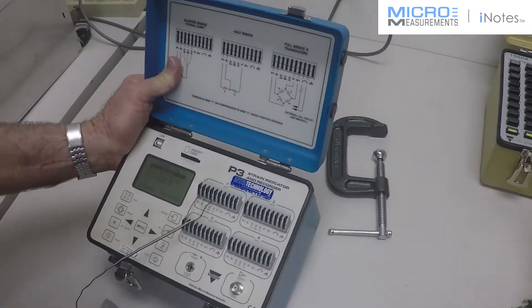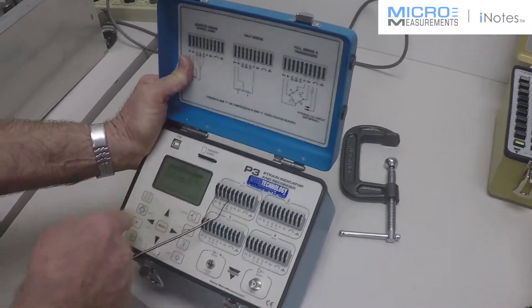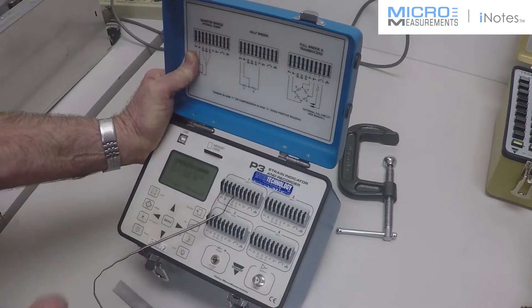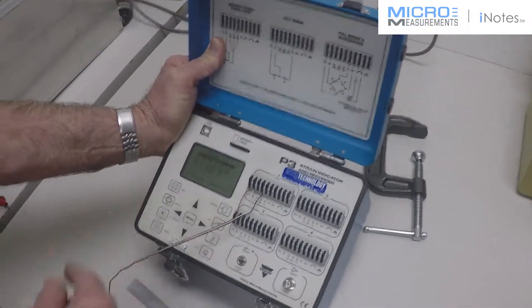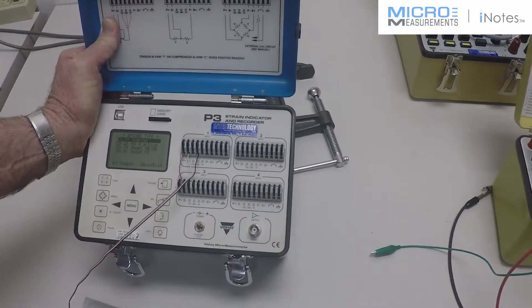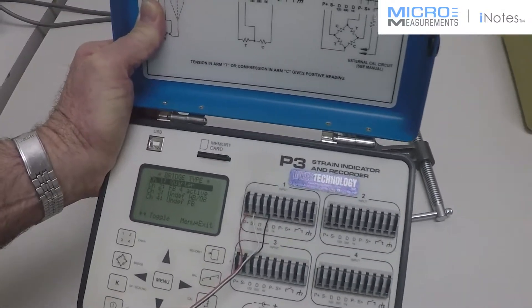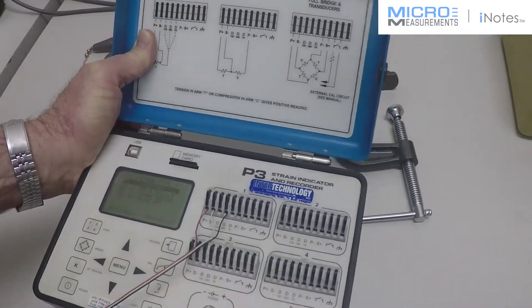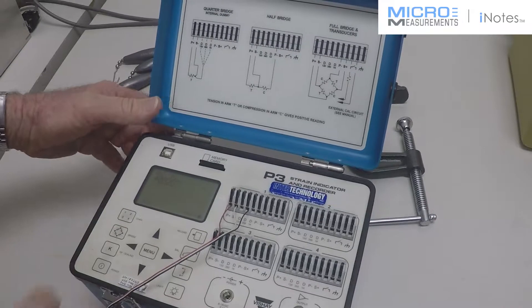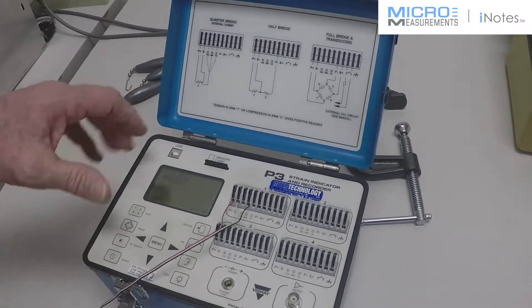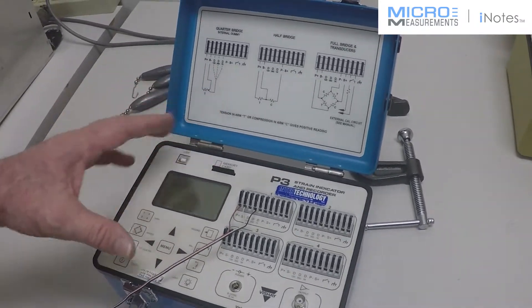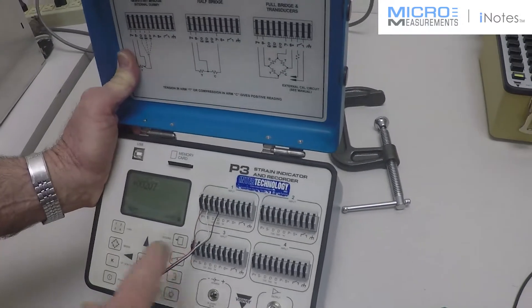If I look at the different channels here, I've got a channel set up for a quarter bridge, a full bridge, active bridge, an undefined half bridge, and also an undefined full bridge. So I can select any type of setup I want, and we have built into the system completion resistors.